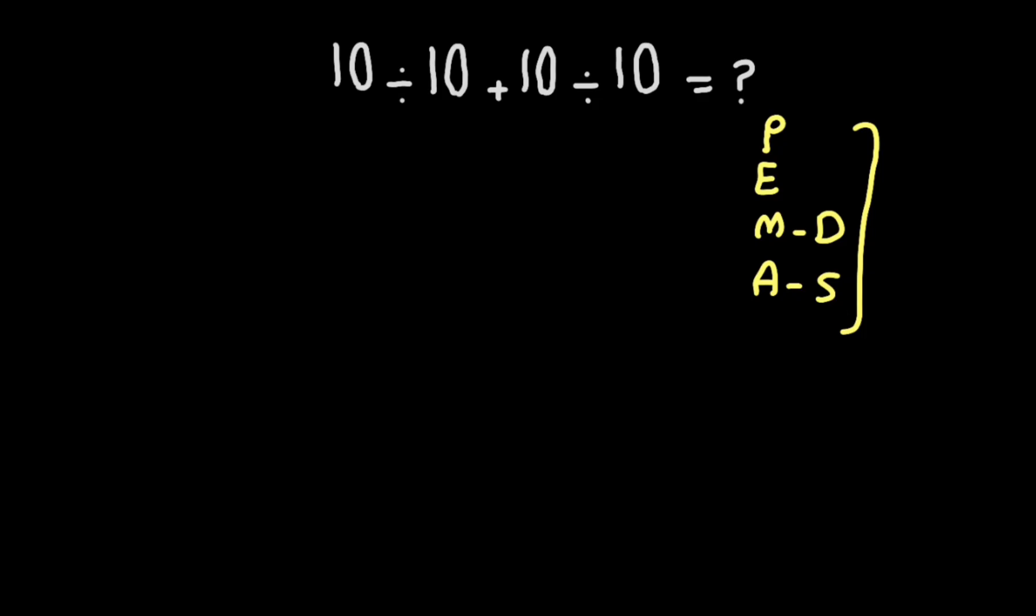According to this rule we have one multiplication, one addition here, and two divisions here. And as we know, division has higher priority than this addition, so we have to start with these divisions.